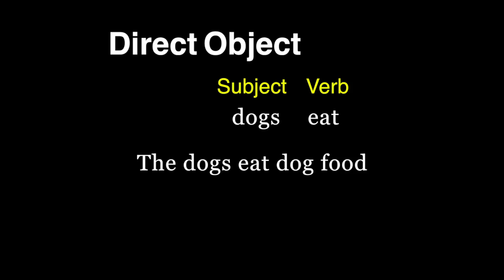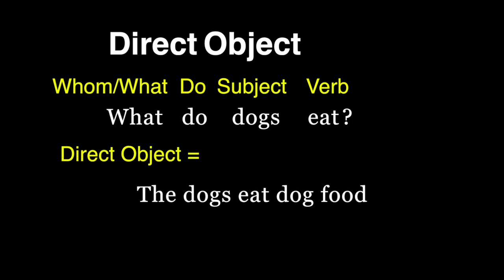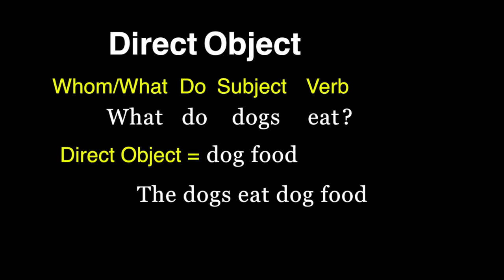Click here to review how to identify the subject of a sentence or verbs. Now, using whom or what, form a question with the helping verb do. What do dogs eat? The answer to the question will be the direct object, dog food.